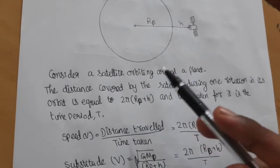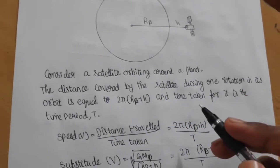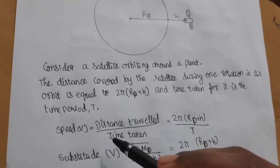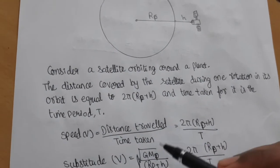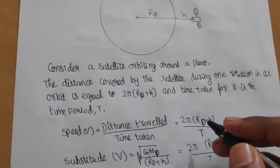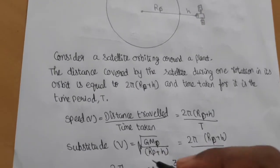The time taken for this is the time period T. Speed v equals distance traveled by time taken, which equals 2π(Rp+h)/T. Substituting the value of orbital velocity,